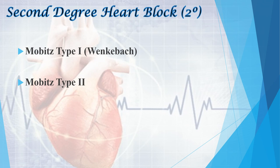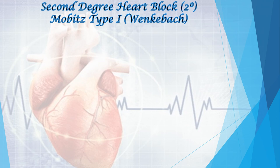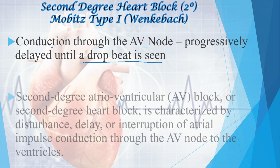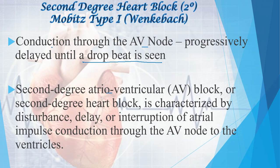In second degree heart block there are two types: Mobitz type 1 (Wenckebach) and Mobitz type 2. In Mobitz type 1, the conduction through the AV node is progressively delayed until a dropped beat is seen. It is characterized by a disturbance, delay, or interruption of atrial impulse conduction through the AV node to the ventricles, with a progressively prolonged PR interval until a QRS complex is dropped.